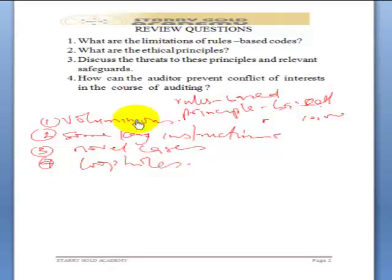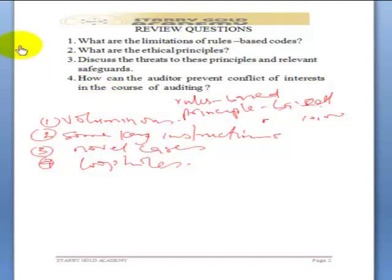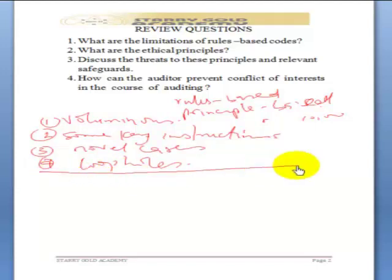Now, secondly, the second question says: what are ethical principles? The ethical principles, as we have discussed, are the principles that are embedded in the code of ethics — the accountant's code of ethics — that the auditor is supposed to be guided by all the time.